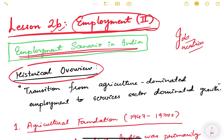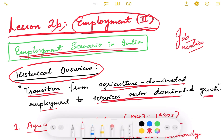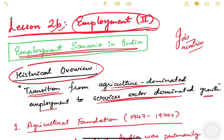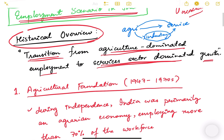In one line, if we want to summarize the historical overview of employment scenario in India, we can say that there has been a transition from agriculture-dominated employment to service-sector-dominated growth in our country. India has followed an idiosyncratic growth path in which we moved directly from an agricultural-dominated to a service-dominated economy, skipping the industrial secondary sector. This is also reflected in the employment scenario.